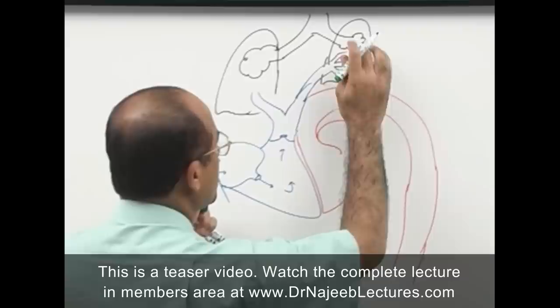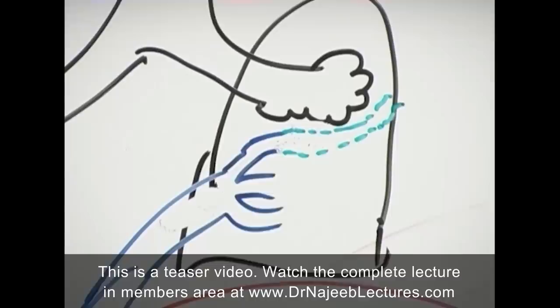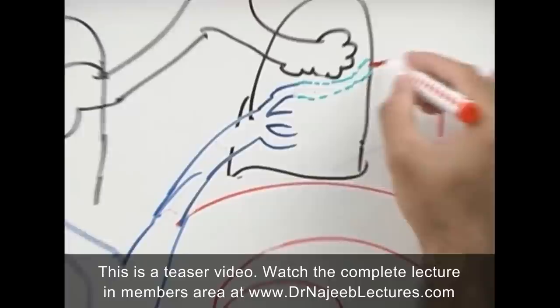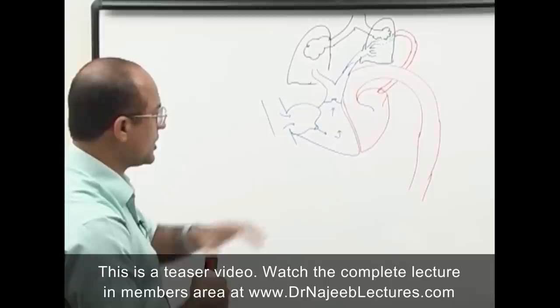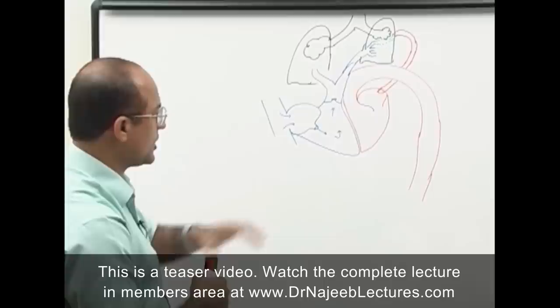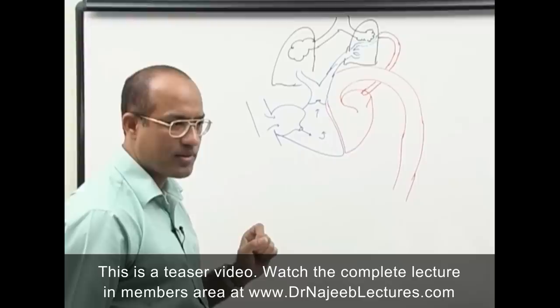Gas exchange occurs here. Well-oxygenated blood from the pulmonary system will come to the left heart. This part of the circulation — between the right heart and the left heart — is called pulmonary circulation.